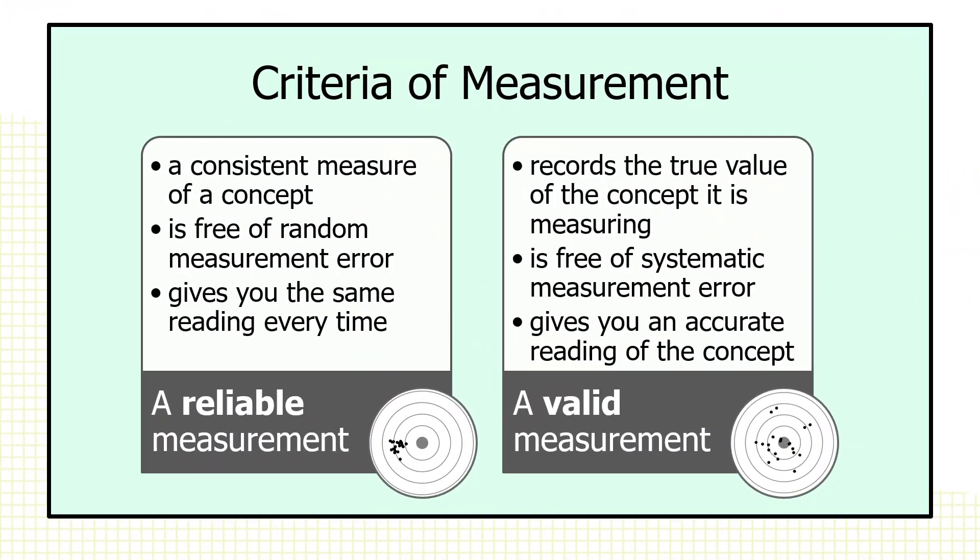Reliability and validity — these are two criteria. A reliable measure is a consistent measure of a concept. It gives you the same reading every time you measure the concept. It does not have any random measurement error in it. Imagine an archer shooting at a target, and the archer hits very, very close to the same spot every time. It might not be the bullseye, but it would be a consistent hit at the same place. The consistency is the hallmark of a reliable measurement.